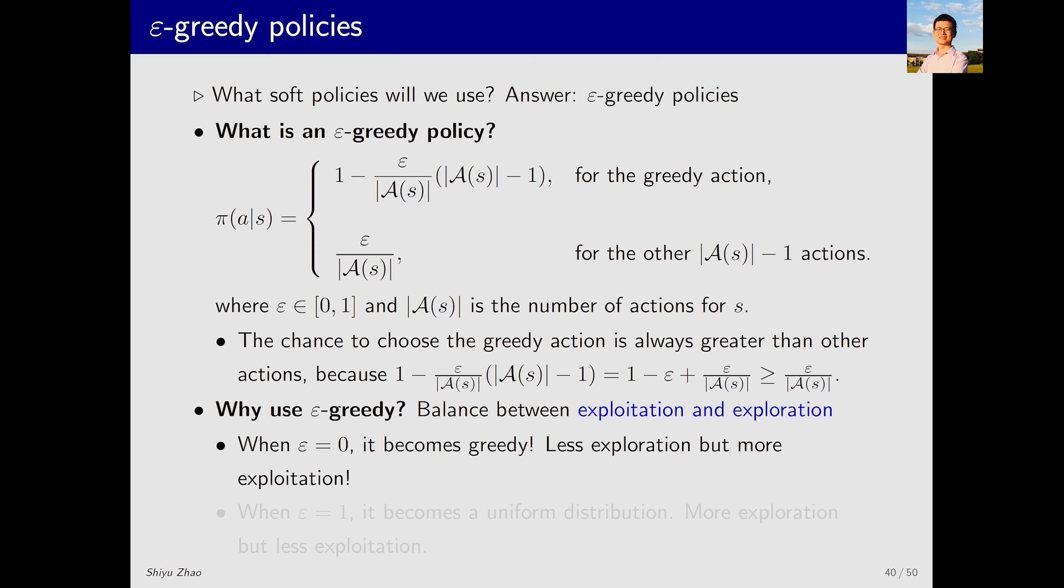For an epsilon greedy policy, if epsilon equals 0, this term is equal to 0 and this is equal to 1, it essentially becomes greedy, meaning less exploration and more exploitation.